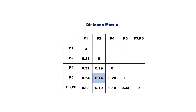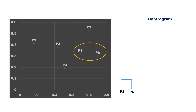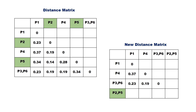Again, find the smallest distance. It is 0.14, which is the distance between P2 and P5. So the next cluster formed is between P2 and P5. Draw the dendrogram and recalculate the distance matrix. Now P2 and P5 are in one cluster, so remove their separate entries and replace with a single entry P2,P5. Calculate the distance from P2,P5 to other points as done earlier.